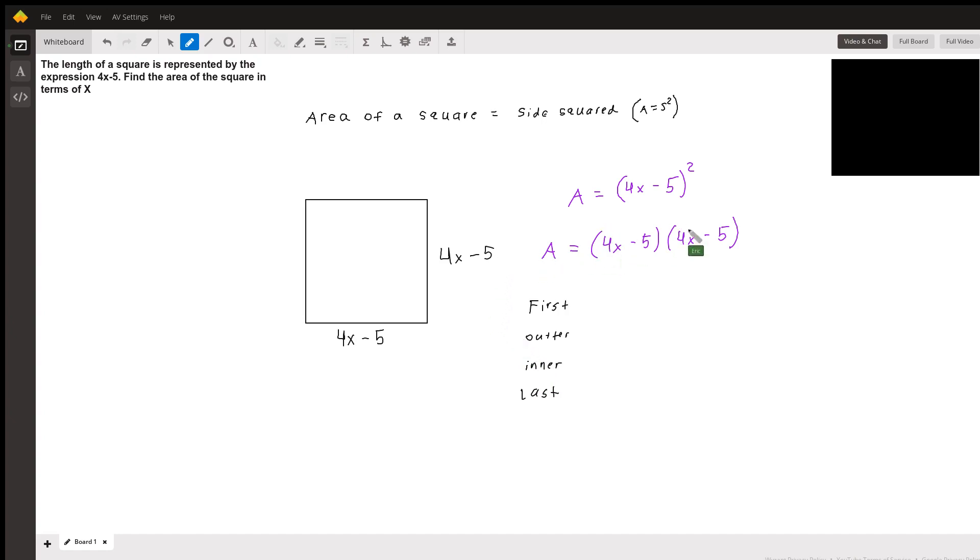So the product of the first terms, 4x times 4x is 16x squared. The product of the outer terms, 4x times negative 5 is negative 20x.